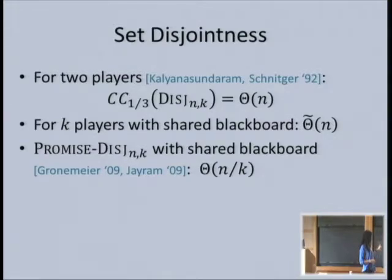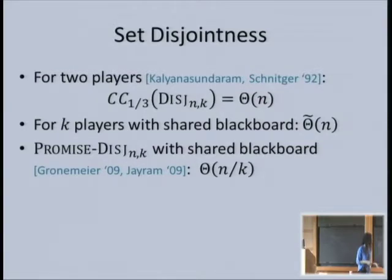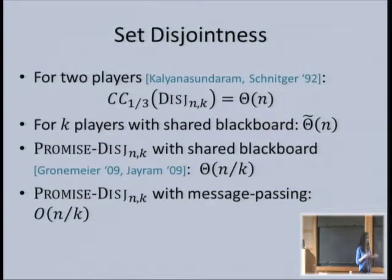One interesting thing to note: you might say, whenever I take a problem I know how to analyze for the shared blackboard and look at it in message passing, maybe we get a factor k for free just because it's now message passing. This is not true: if you look at promise set disjointness in the message-passing model, you can still do it in O(n/k). This algorithm works pretty much as-is, so we don't get the factor k for free.